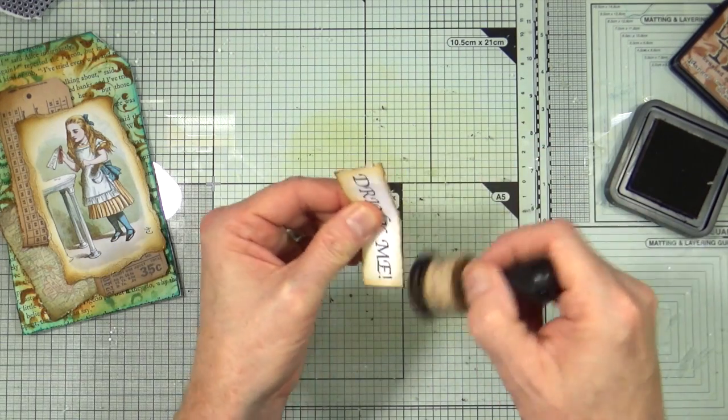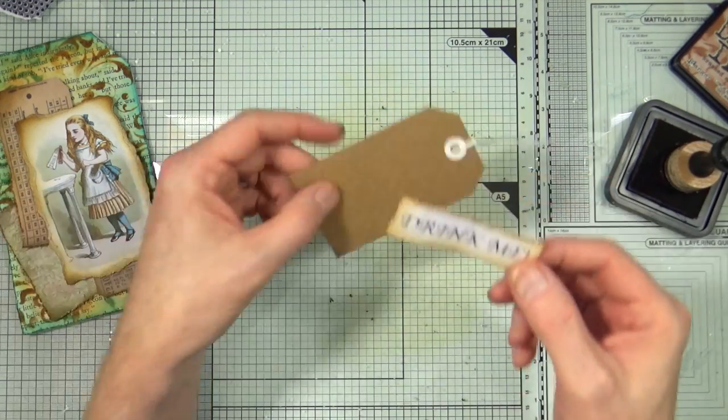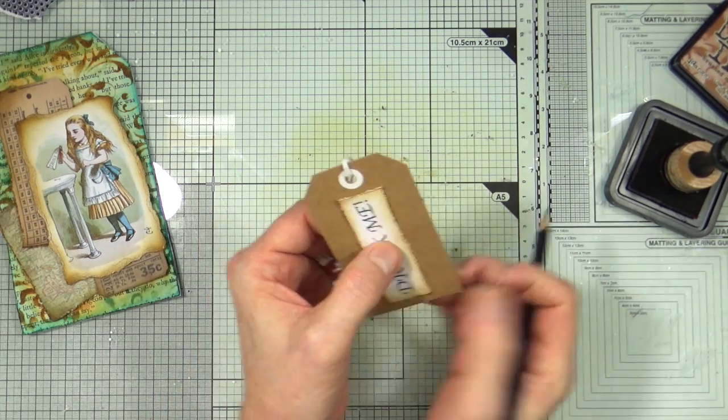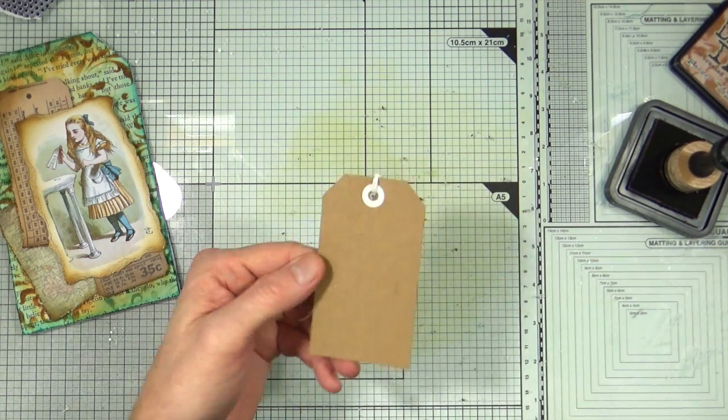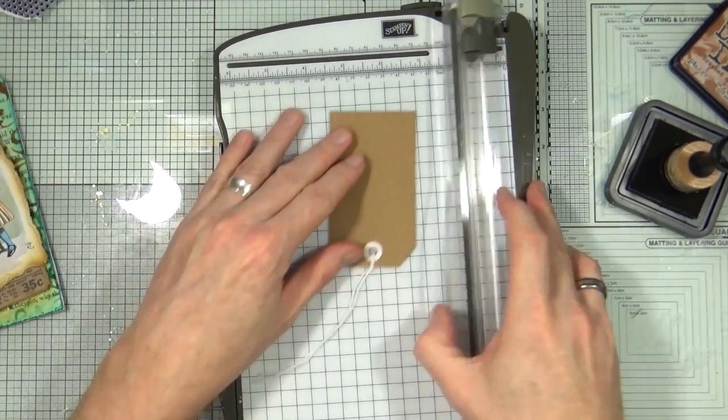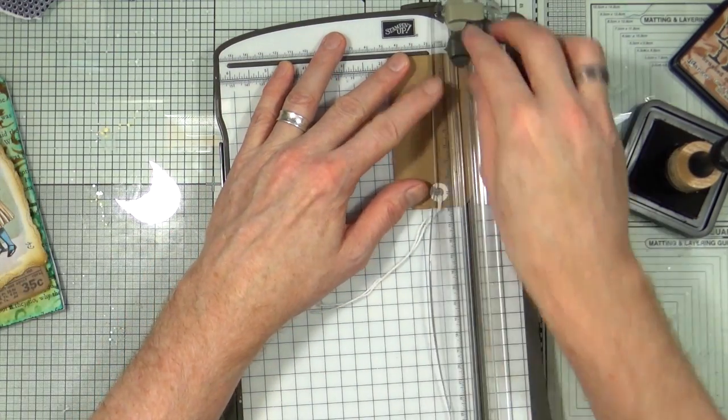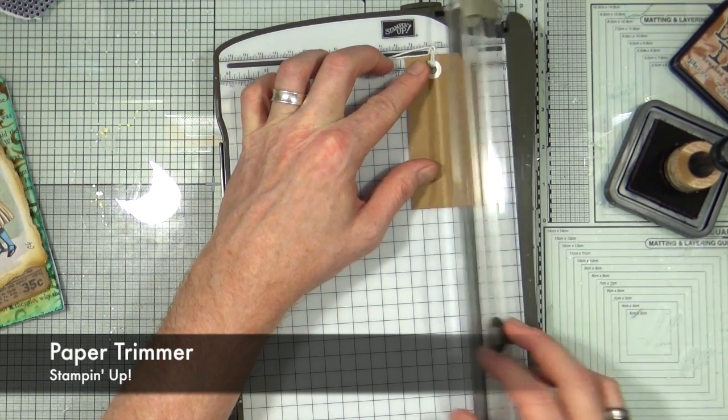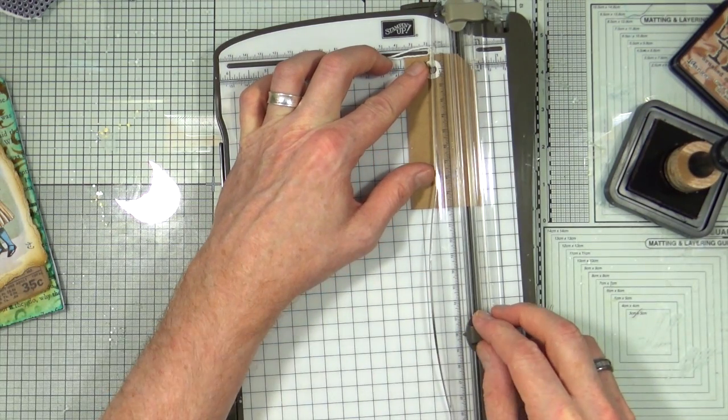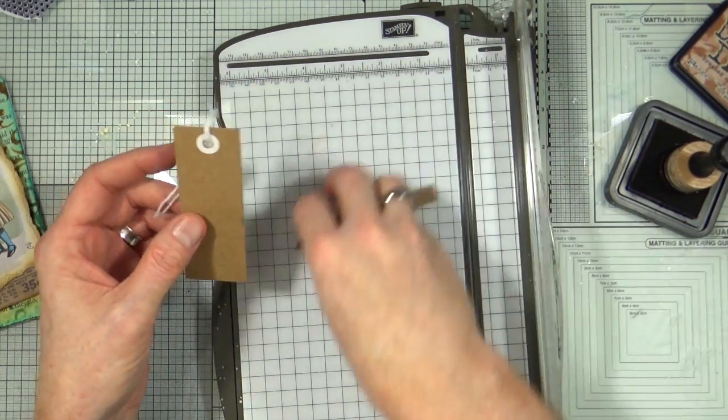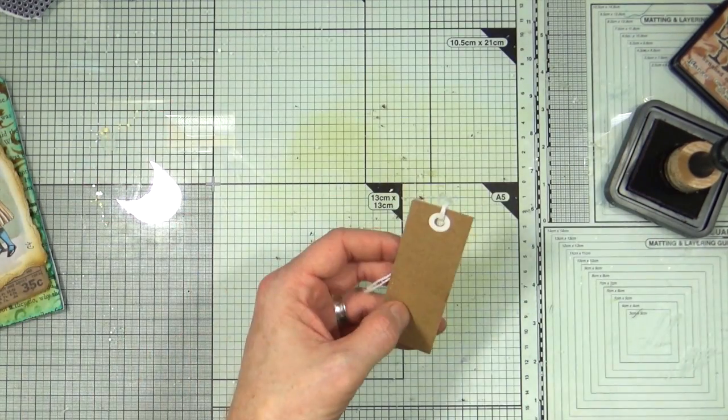Now I'm happy with that, I want to layer this onto a smaller tag. I've pulled out an old craft tag that I have in my stash and all I'm going to do is cut it down and create a smaller version of this tag. For that I'm just going to bring up my Stampin' Up paper trimmer, I'm going to trim down the sides either side of the hole, and then I'm going to just snip off the corners to create another long and thinner tag shape in which I can stick my drink me title down onto.